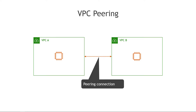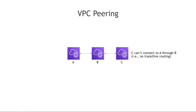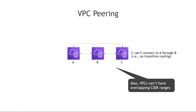For terminology, this connection is called the peering connection. This lets you connect two and only two VPCs. If you have more than two, you'll have to create a peering connection between each pair — you can't daisy chain them together or route through them. In other words, if I have three VPCs A, B, and C with a connection between A and B and a connection between B and C, C is not connected to A through B. That's called transitive routing and it's not allowed with VPC peering.